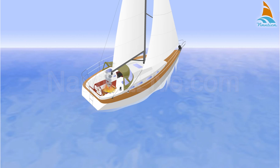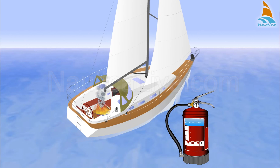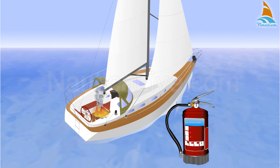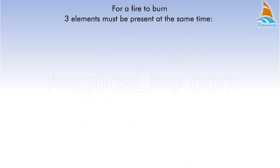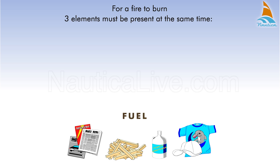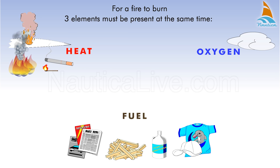In order to understand how to extinguish a fire, you should first of all know something about the causes. For a fire to burn, three elements must be present at the same time. These three elements are fuel, heat and oxygen.